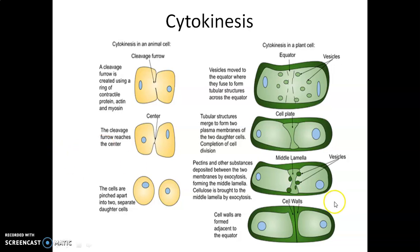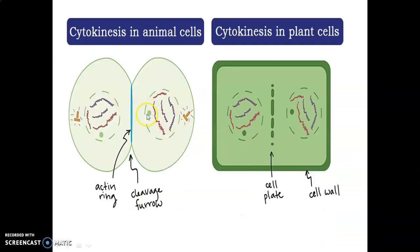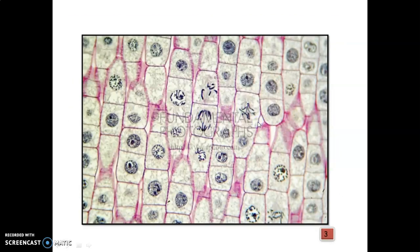Cytokinesis in animal and plant cells are different. See children, in animal cells a furrow, a deep furrow is formed here and it results in the formation of two daughter cells. Whereas here, instead of a furrow, a cell plate differentiates the cells into two. Here you can see cytokinesis in animal cell and cytokinesis in plant cell. Here in center, cleavage furrow formed whereas here cell plate formed. Only that is the difference.